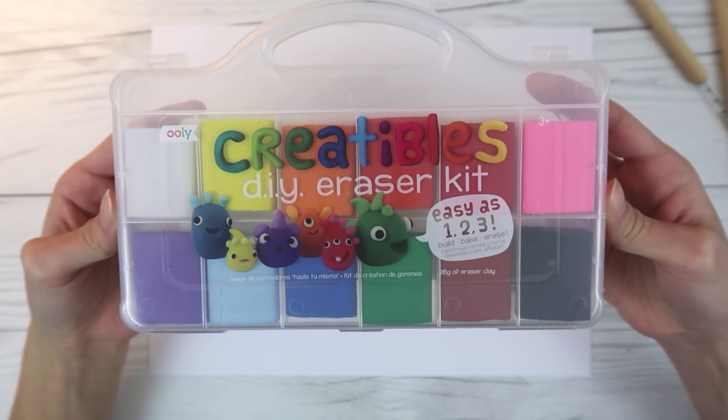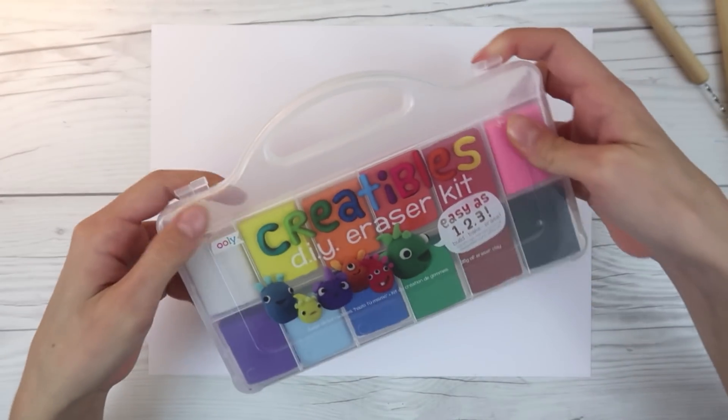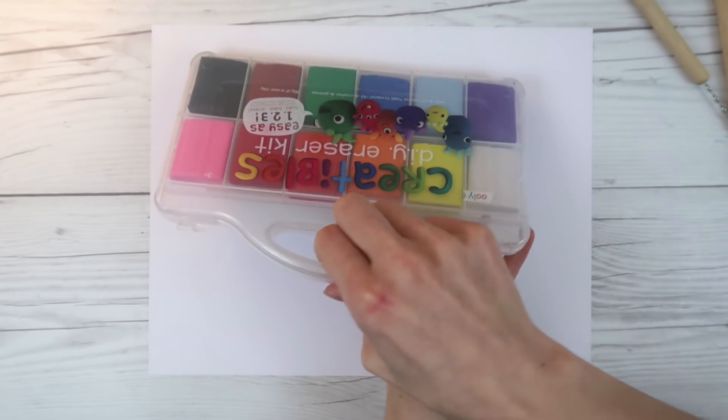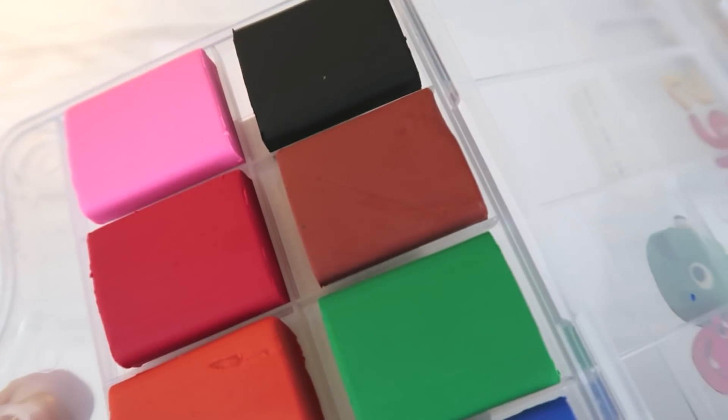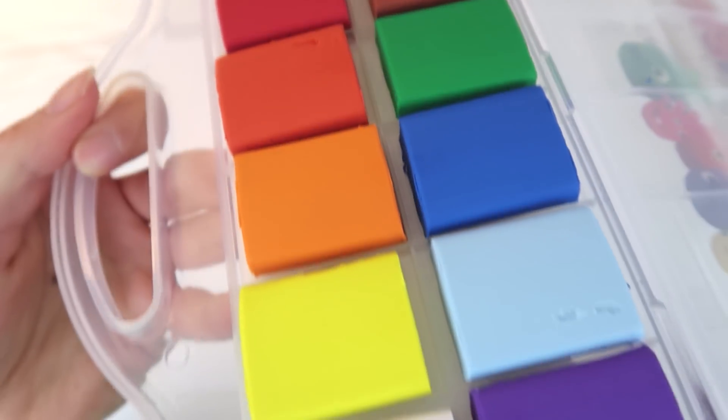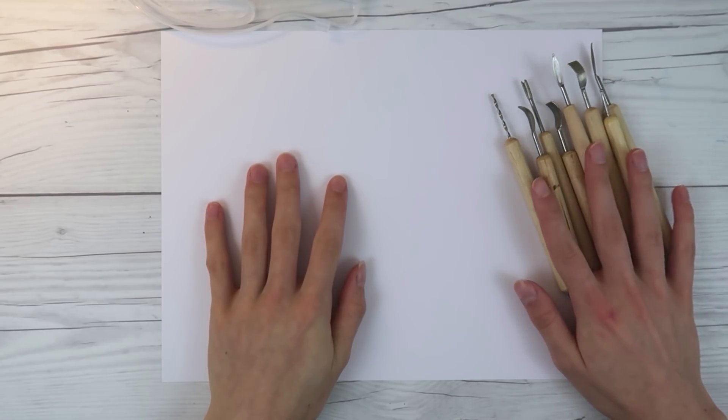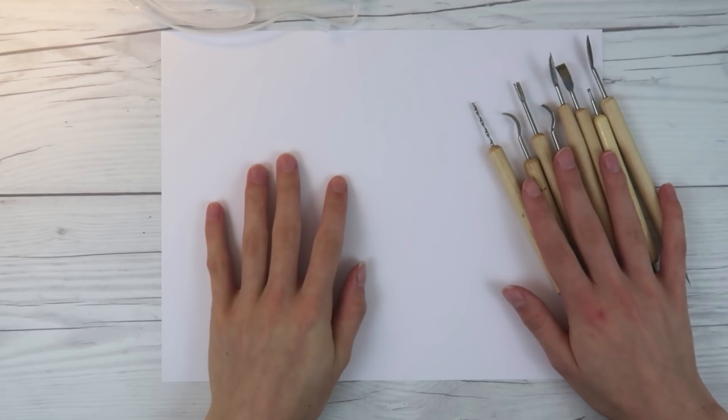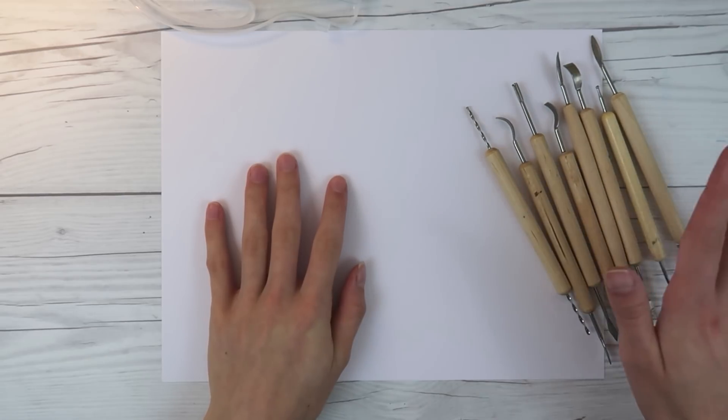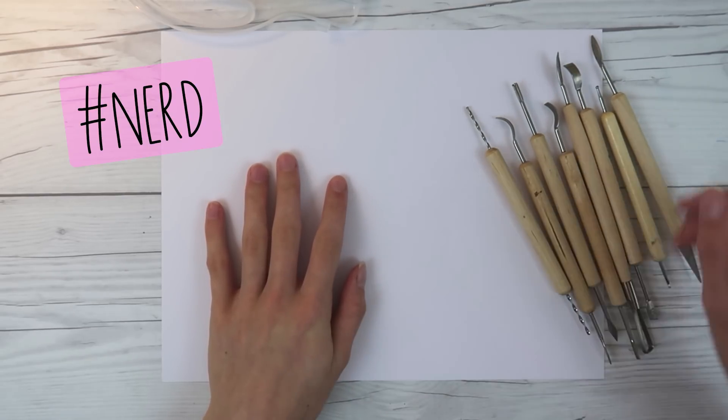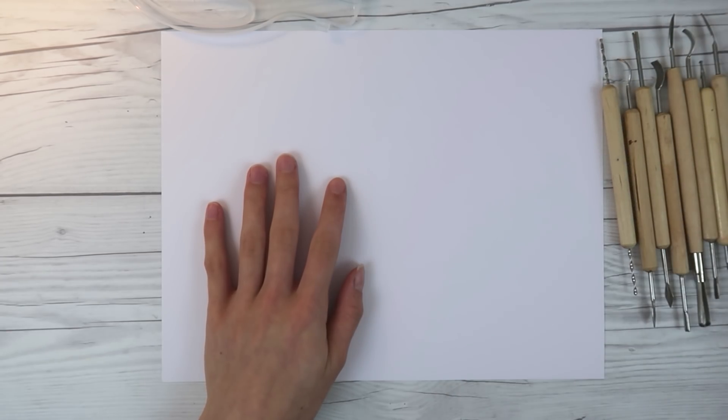Alrighty, here's the kit up close. I'm gonna open it up and have at it. I have to smell this. Okay, it smells kind of like Play-doh. Look how pretty all these colors are. Conveniently I have a lot of clay tools because I used to do a lot of stuff with Sculpey back in the day, not too long ago actually.